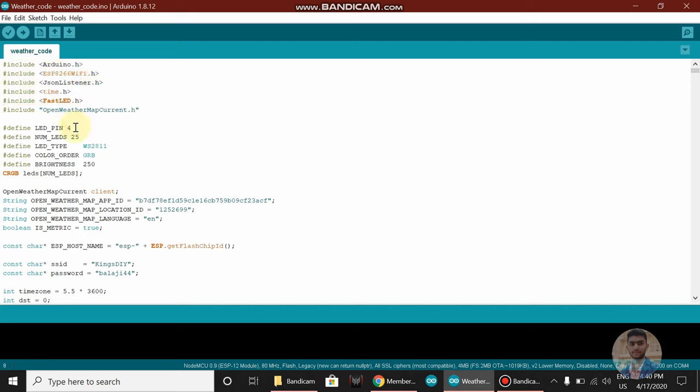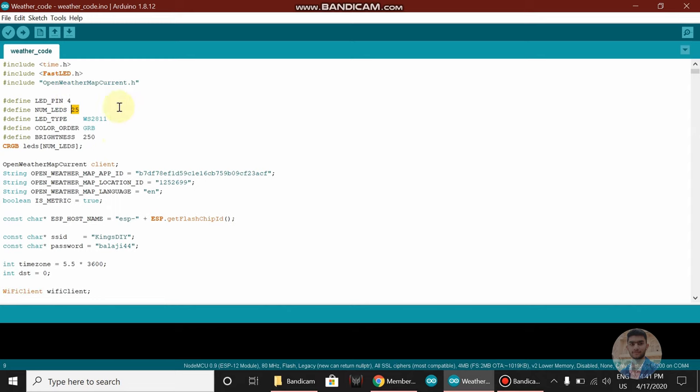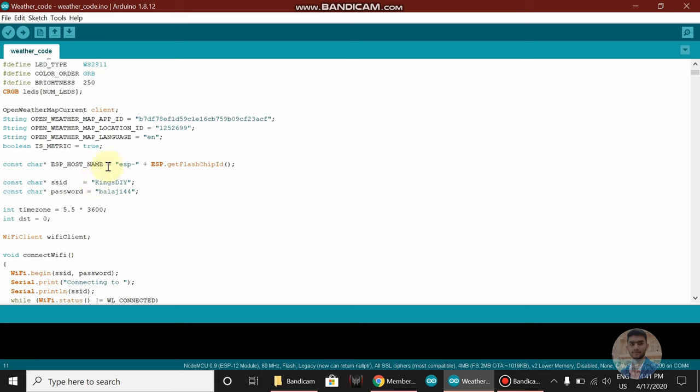As you can see here, we have defined the LED pin as 4 and number of LEDs as 25. It's asking for an OpenWeatherMap app ID, which you can get from openweathermap.org.